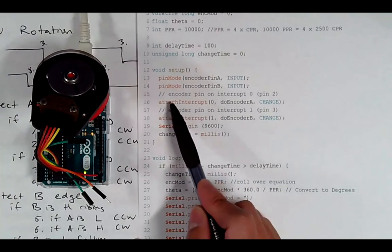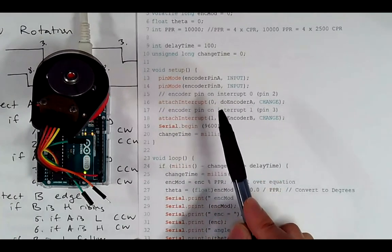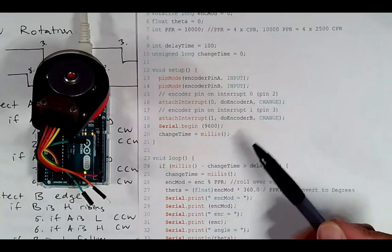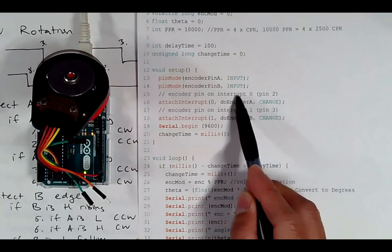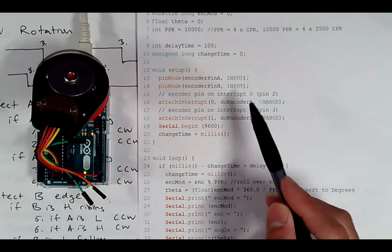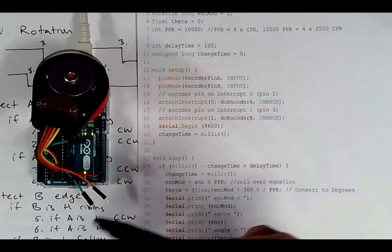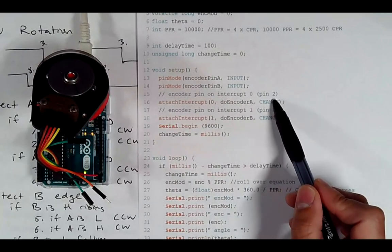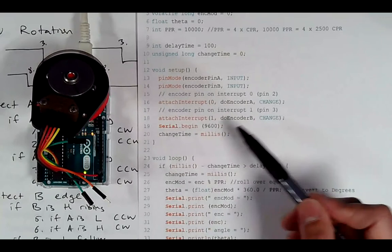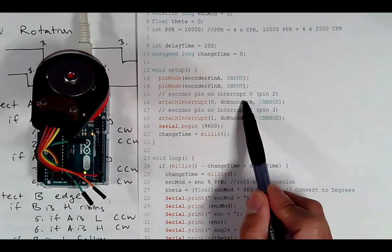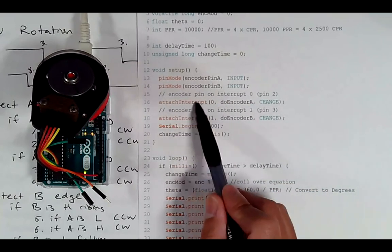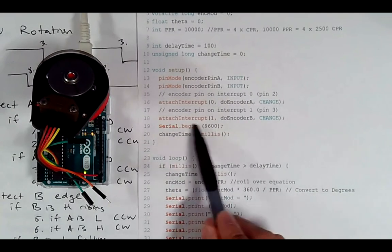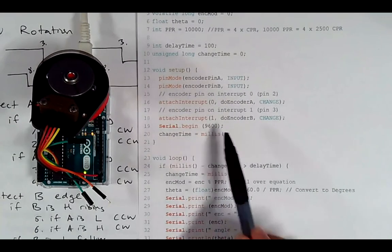Now, zero and one on this attach interrupt function correspond to pins two and three, if you look at the Arduino data sheet. And then when we call this do encoder A, do encoder B, those are the two interrupt service routines that I mentioned before. Now, the change means you can actually put rising, falling, change here. Change just means if you see any change on this, whether it's rising or falling, it'll go in and go look at this interrupt service routine and do that.